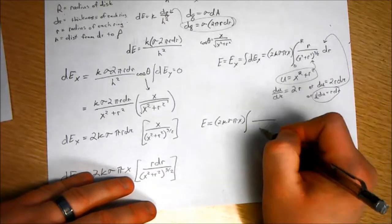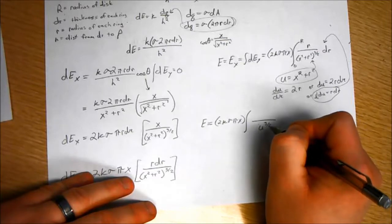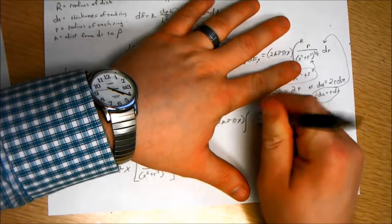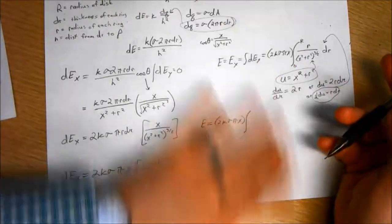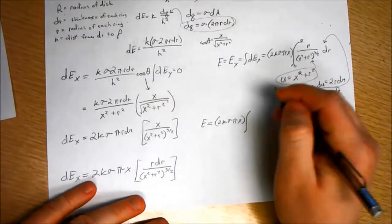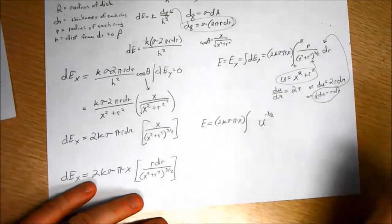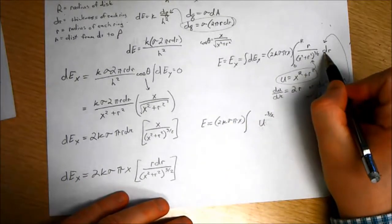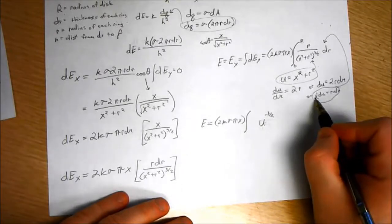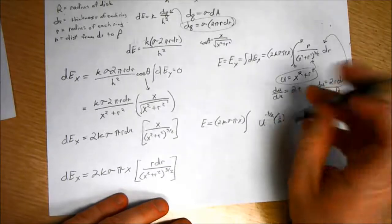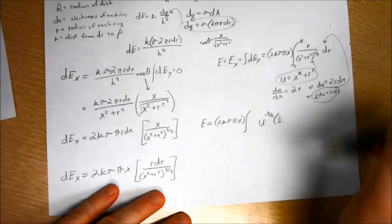U to the negative 3 halves. Now, here we have R dr, so R dr can be substituted in with 1 half DU. So, now I have the integral of U to the negative 3 halves times 1 half DU. I can integrate this with respect to U.